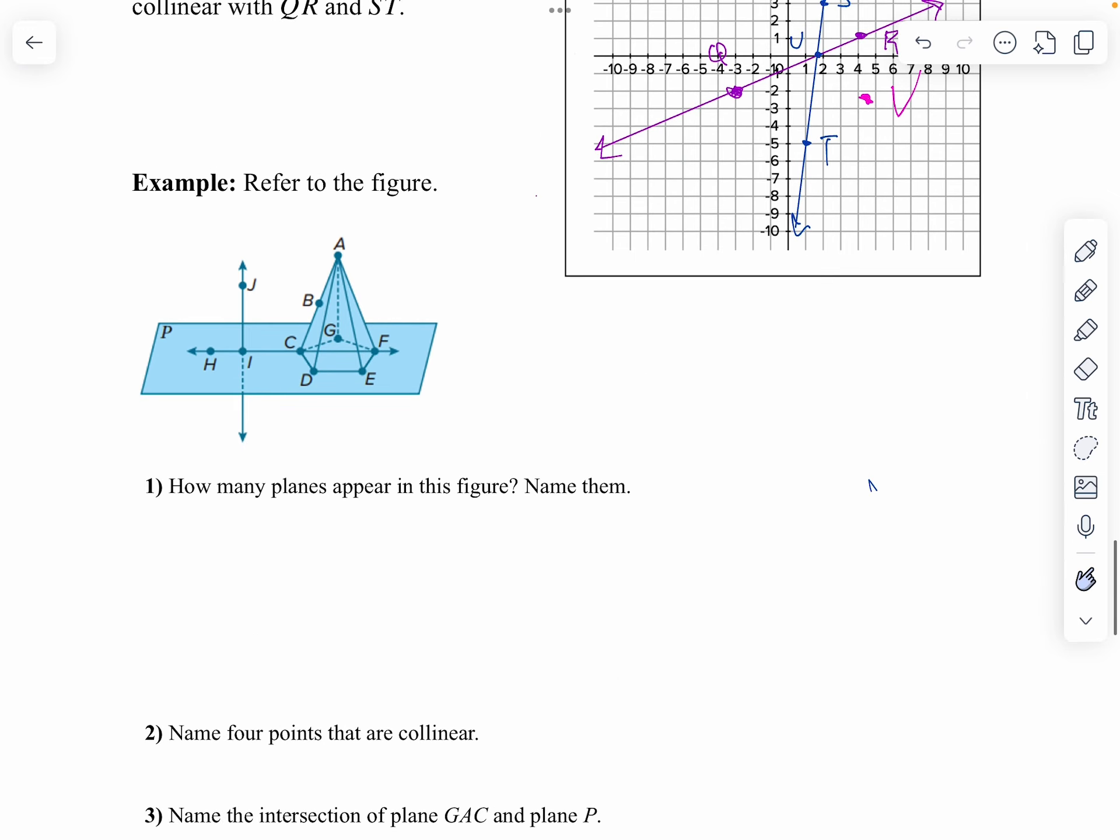Now let's take a look at our next example. How many planes do you see in this figure? And then we want to name them. Well, my planes, notice I've got one, two, three, four, and five going up. I've got a six plane here on the bottom. So I have six planes.